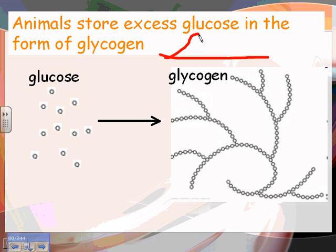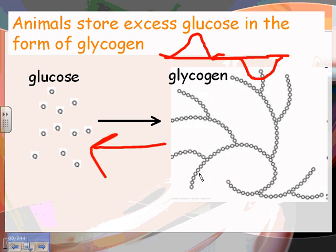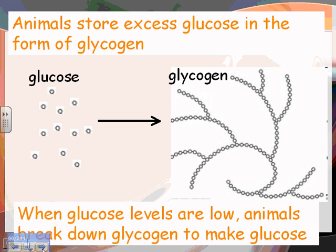Animals store excess glucose in the form of glycogen. Your blood glucose level goes up, you secrete insulin, and the blood glucose level comes back down as glucose molecules are bonded together to make glycogen. After a while, your blood glucose level starts to drop again. The body then releases glucagon — not insulin — which brings blood glucose back up by breaking down glycogen into individual glucose molecules. When you run out of both glucose and glycogen, your body turns to fat.